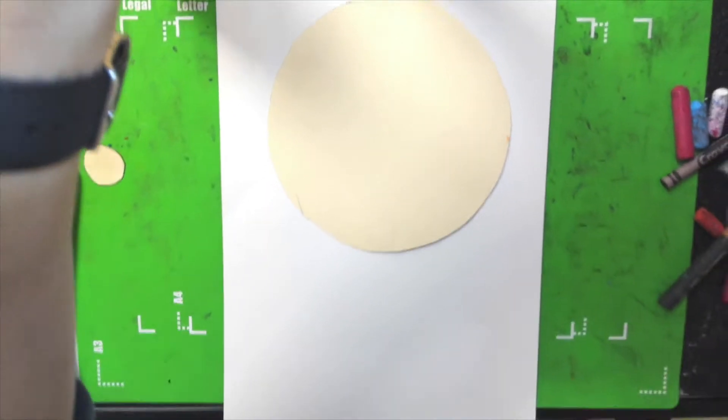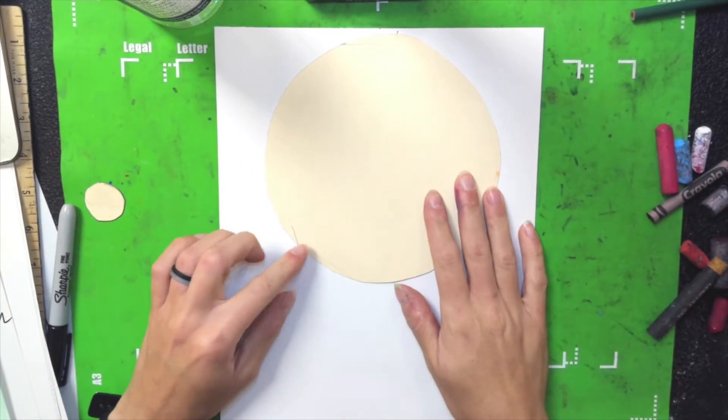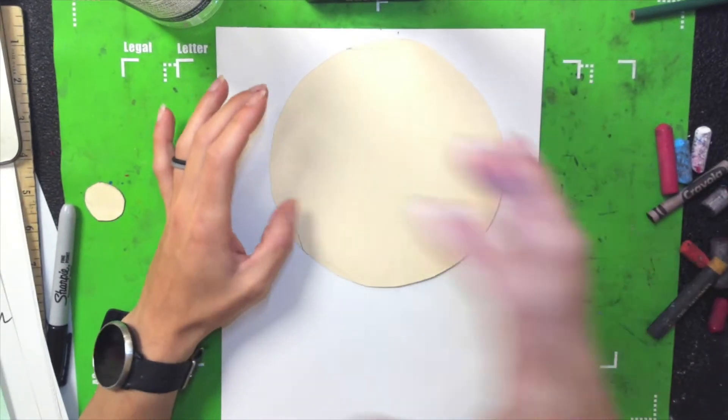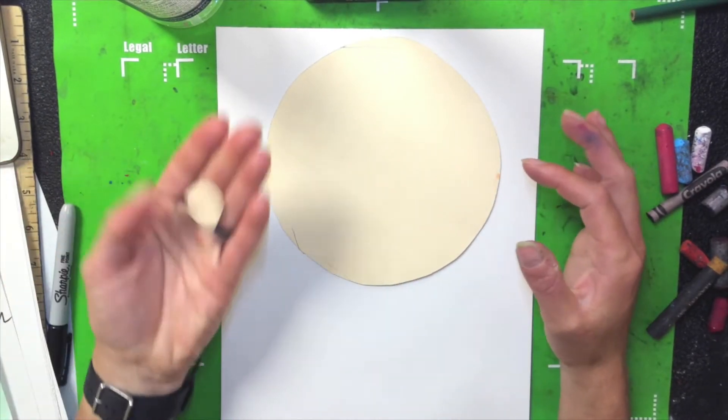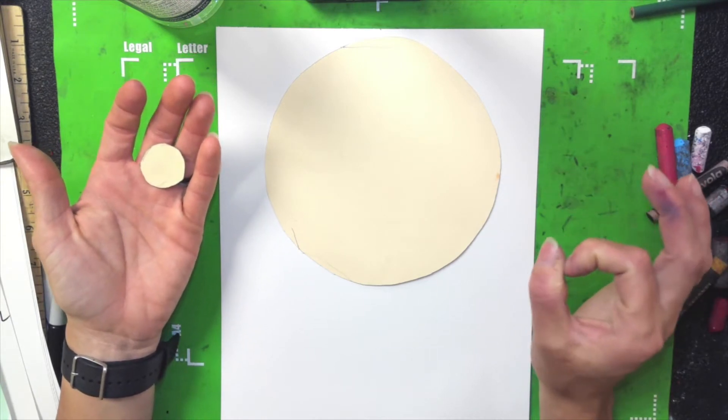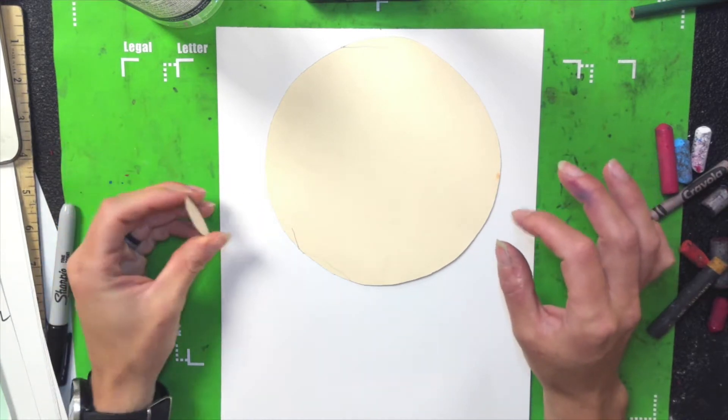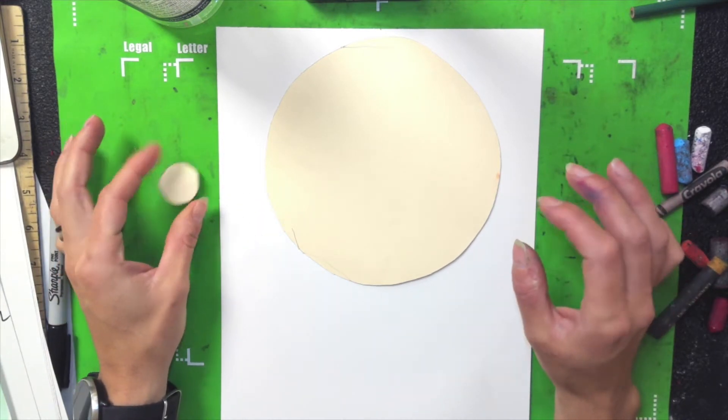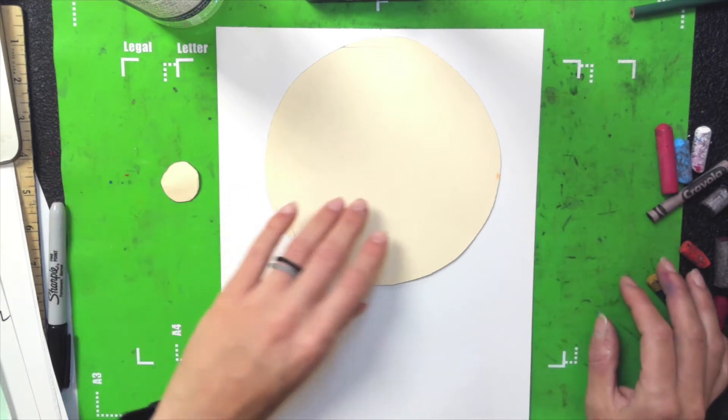For our gumball machine project you'll need a piece of paper, a circle tracer. If you're at home maybe have a bowl to flip it over or a smaller plate. Then you'll need a smaller tracer, maybe a water bottle cap or the lid of a glue stick or a quarter to trace for your gumballs. Then we will be using oil pastels. If you don't have them, crayons work just fine.